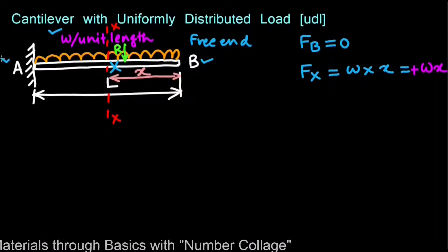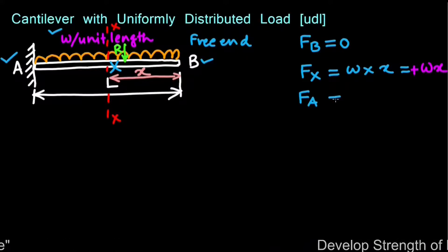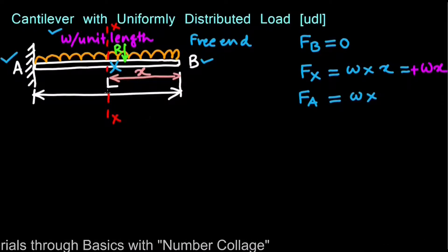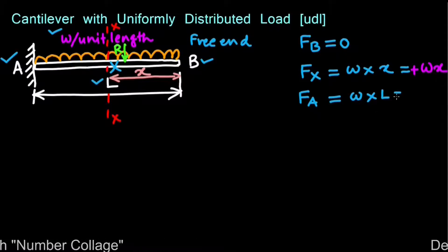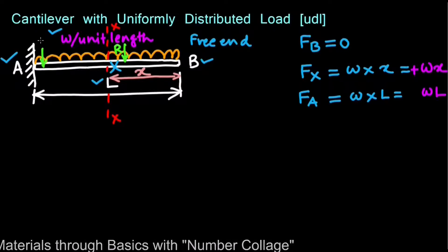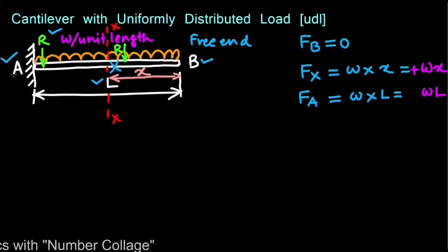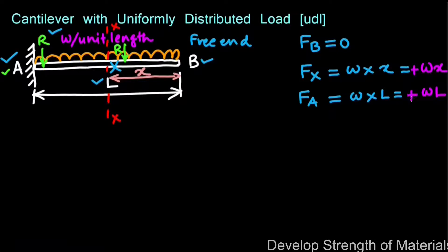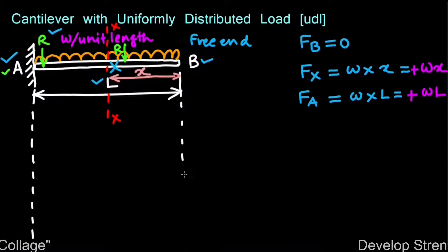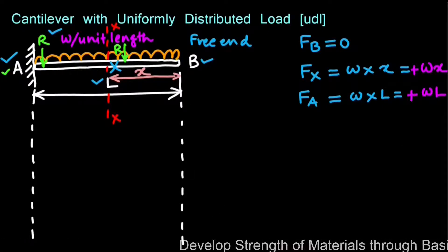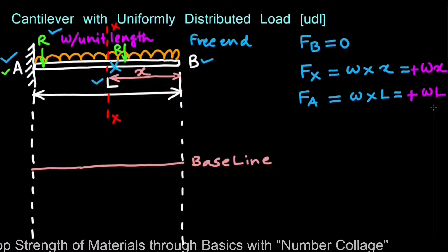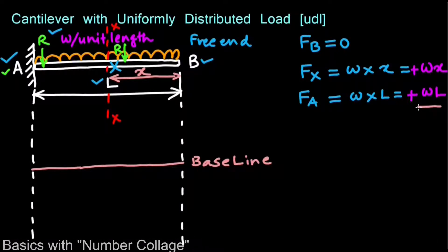The shear force at point A is FA = WL, positive because there is a vertically downward load to the right of the section passing through point A. To draw the shear force diagram, we extend the ends of the cantilever beam downwards and draw a baseline. The magnitude of shear force at point A is maximum, which is WL.